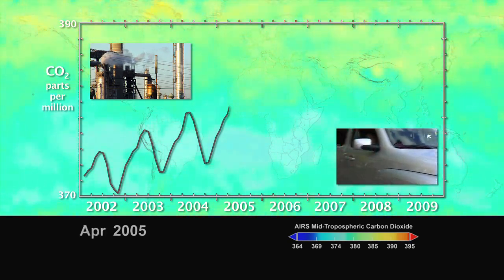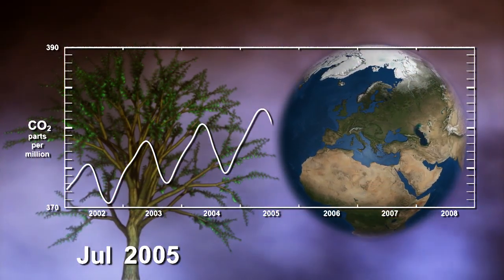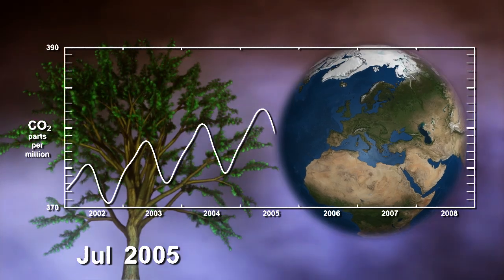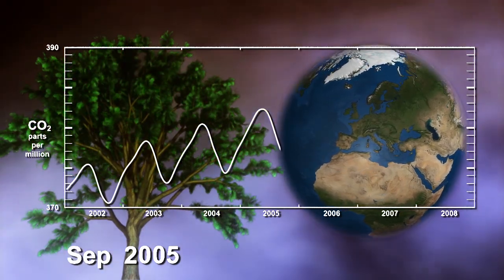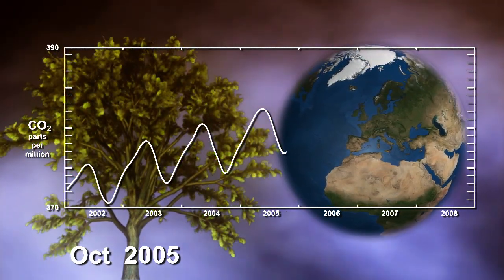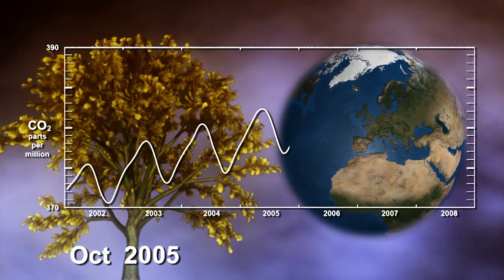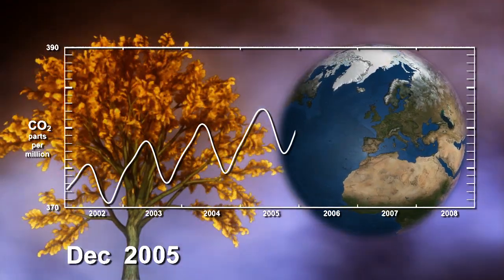In photosynthesis, plants absorb sunlight and carbon dioxide to make oxygen. And in what's known as respiration, plants produce small amounts of carbon dioxide that is released back into the atmosphere.